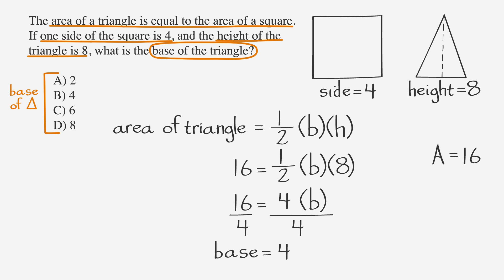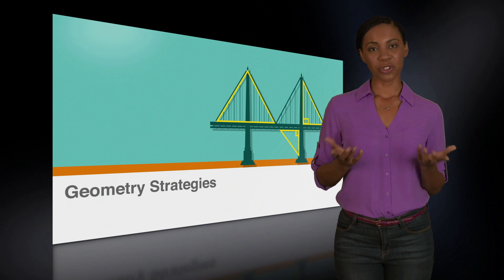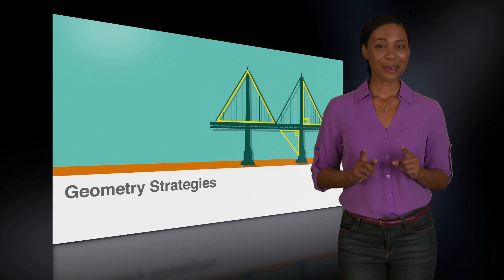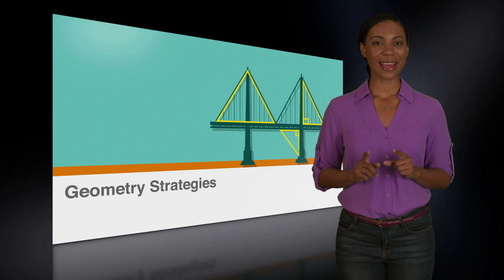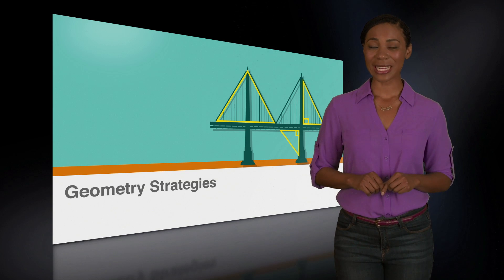Looking back at our answer choices, we see that answer choice B is 4. Circle it because you now know it's the right answer. Whether you're given a picture or you've drawn your own, there's another strategy that can help you get to the answer even if you don't know the exact calculations needed for the problem.